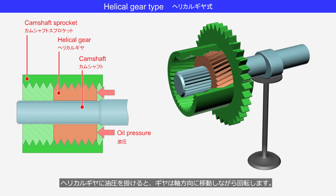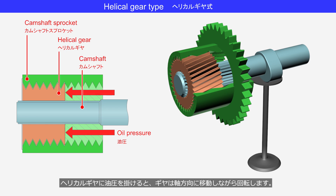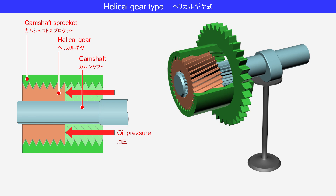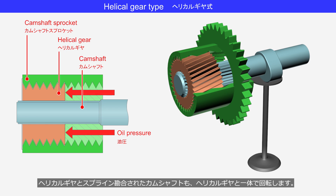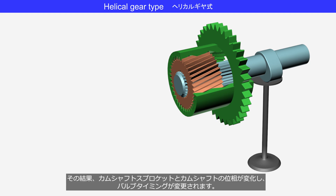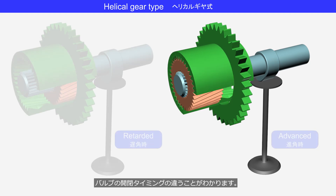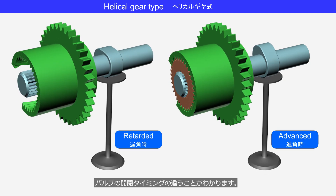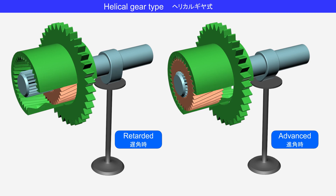When hydraulic pressure is applied to the helical gear, it moves in the axial direction and rotates. The camshaft, which is spline engaged with the helical gear, also rotates together with the helical gear. As a result, the phase between the camshaft sprocket and the camshaft is changed, altering the valve timing. You can see that the valve opening and closing timings are different.